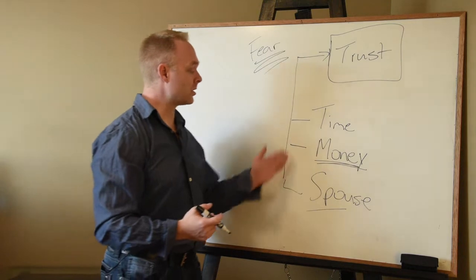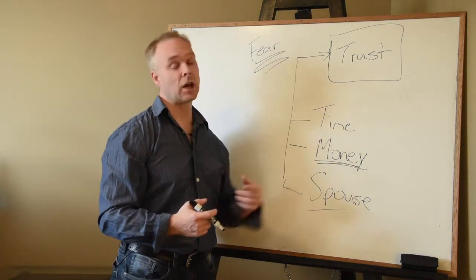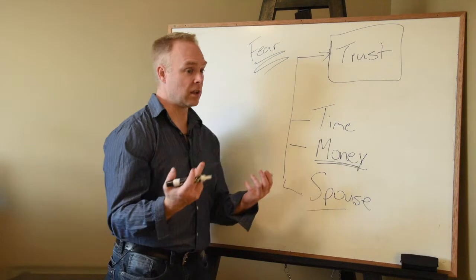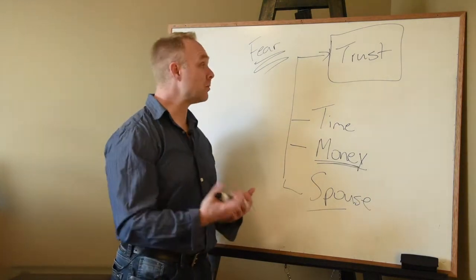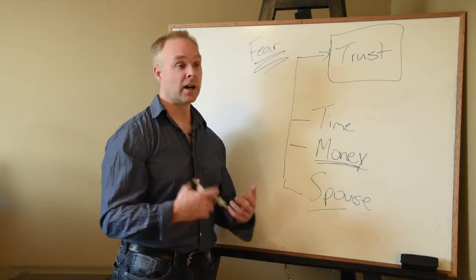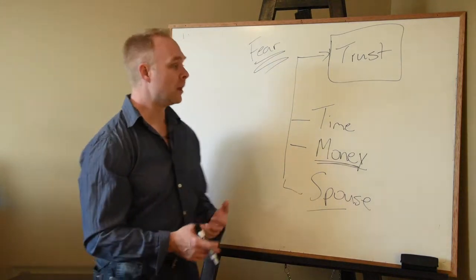Time, money, spouse, all equate to one thing and that is trust. If somebody trusts you, they're going to agree to try and that's all we need going forward today. So time, money, spouse, whether these objections are real or not, at the end of the day, what we're really saying is that they don't trust you. And that's what we need to overcome - we need to educate and make people feel warm and comfortable and ultimately so they can trust us.